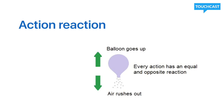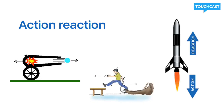A good example is the balloon lab. When the air pushes out of the balloon, the balloon goes up, because however much force goes out of the balloon, the same amount goes back in the opposite direction. This is also true for launching a rocket — however much force goes down from the rocket as the gas is burning, the same amount of force pushes the rocket back up.